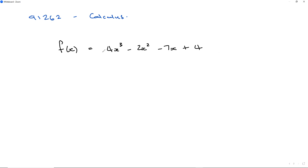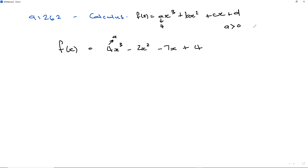From this cubic function, I know it gives you some information. This value out front is your a value. We can write this in the form f of x equals ax cubed plus bx squared plus cx plus d, and we can see that value is 4, which is my a value. When the a value is greater than 0, or positive, the cubic function goes up first, reaches a maximum, then turns and goes down, passes some kind of point of inflection, and goes all the way down to reach a minimum before it goes up again.